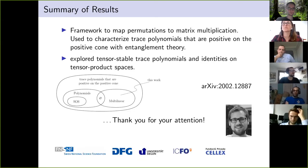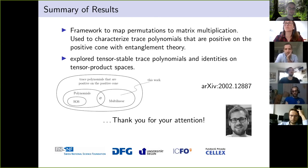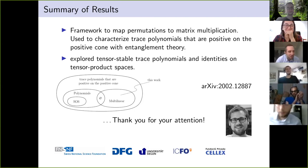In summary, I've presented a framework mapping permutations to matrix trace polynomials, which can be used to characterize trace polynomials positive on the positive cone via entanglement theory — particularly Werner state witnesses — and to explore tensor stable trace polynomials (lambda^{⊗n} maps) and tensor product identities. Thank you for your attention.